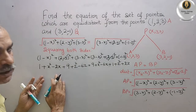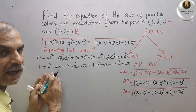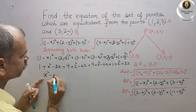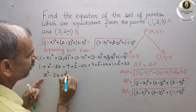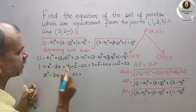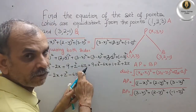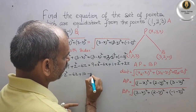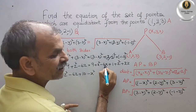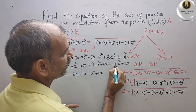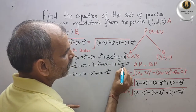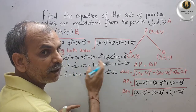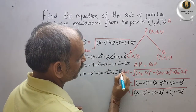Now bring everything to the left side and rearrange. On the left: x square minus 2x plus z square minus 6z plus 10. Subtract the right side — every sign changes. So we get minus x square plus 6x plus minus z square minus 2z minus 10 equals 0. Combined: x square cancels with minus x square, z square cancels with minus z square.